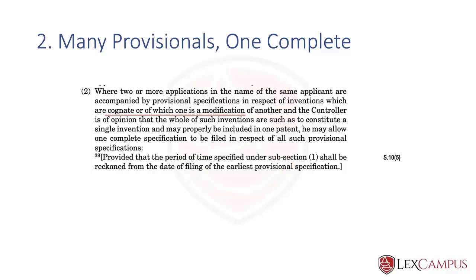When there are many provisionals, the question arises: when do you ascertain the 12-month period? The 12-month period is ascertained from the first disclosure — from the date of filing of the earliest provisional specification. This is logical because if the 12 months were to start from the last provisional, it would give an unfair advantage to that person, allowing more than 12 months to make their complete application. So it is always from the first disclosure, and the time starts ticking from the filing of the first provisional. This is not a technique to extend the time — you only have 12 months from the first disclosure.